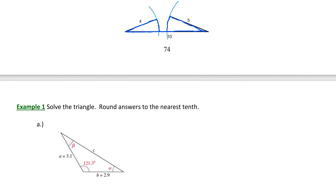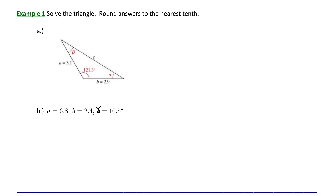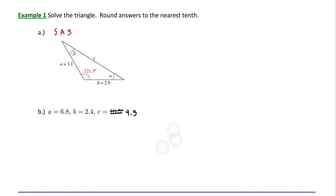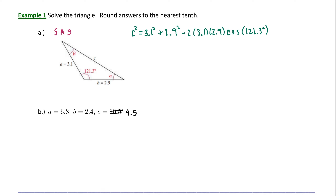Let's try the law of cosines on example one. Our goal on both examples is to solve the triangle, approximating answers to the nearest tenth. In example A, we have the side-angle-side case — two sides and the included angle are known. To solve this triangle, we begin by solving for C using the law of cosines: C squared equals 3.1 squared plus 2.9 squared minus 2 times 3.1 times 2.9 times cosine of 121.3 degrees.